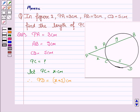Now, we know that PB into PA is equal to PD into PC.